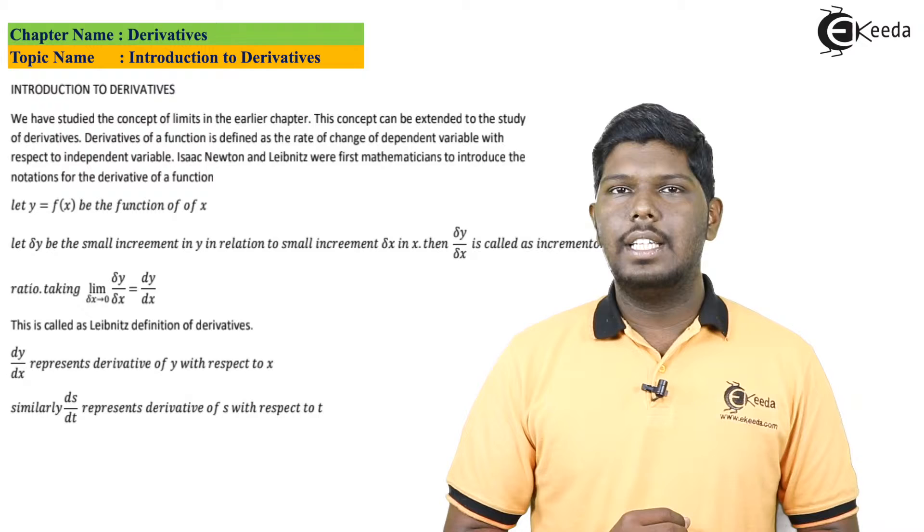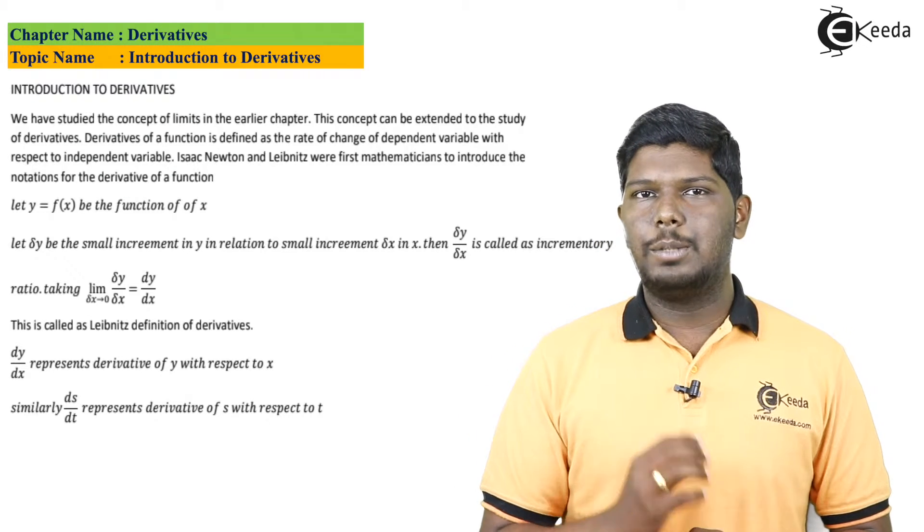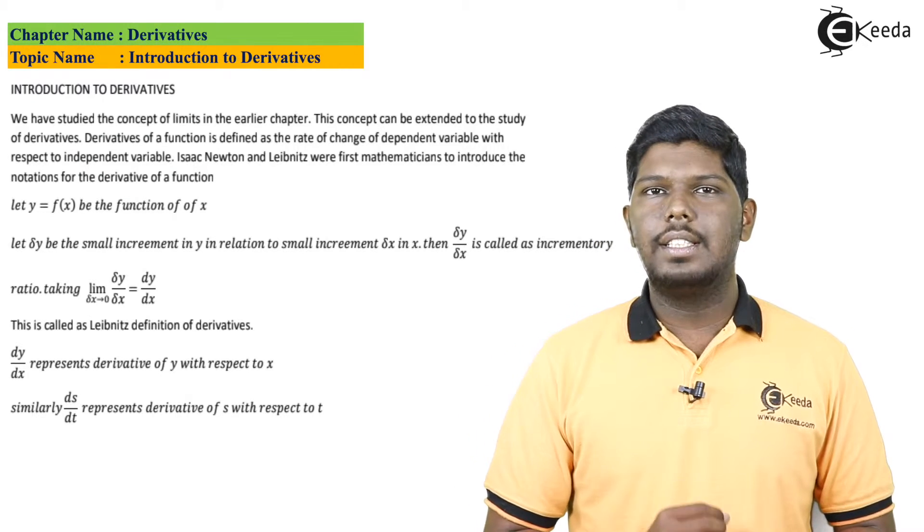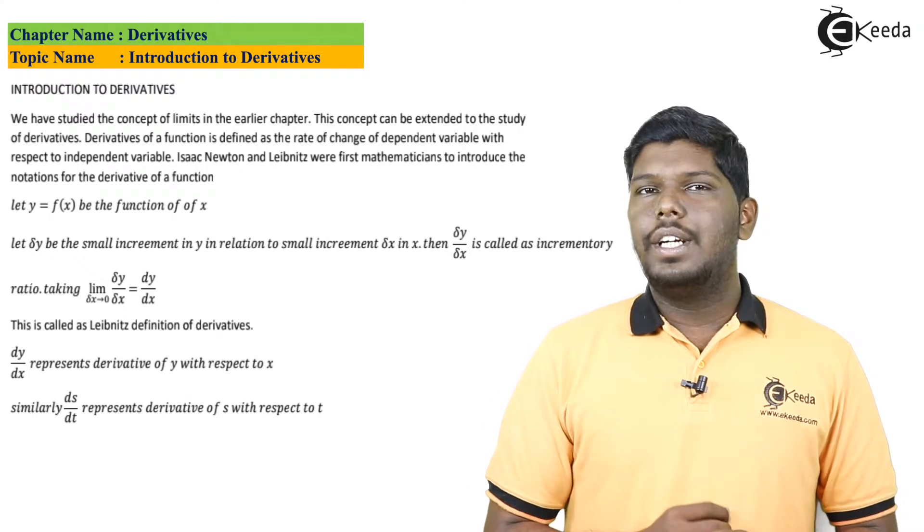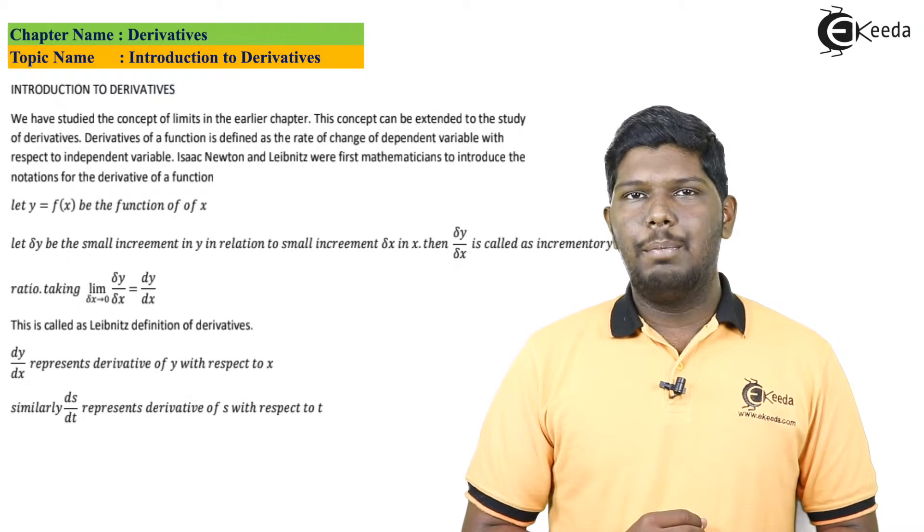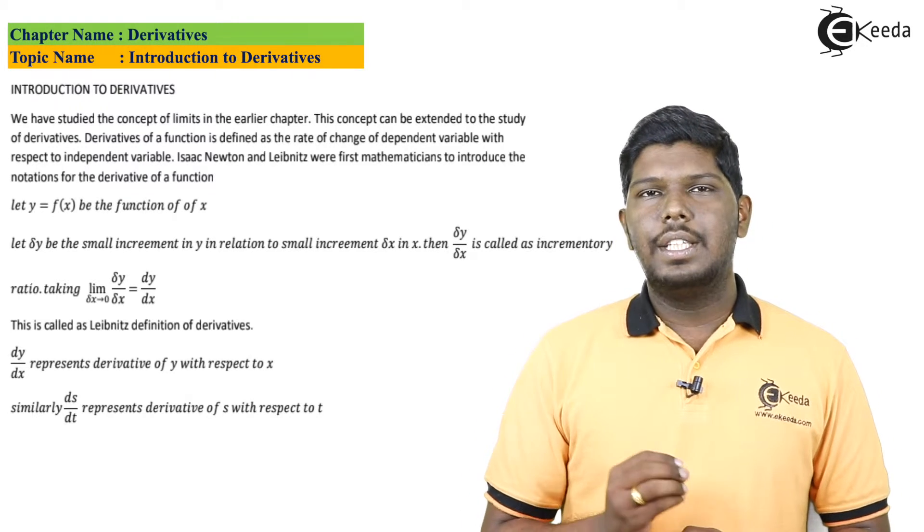And that can be written as dy by dx. This was the definition given by Leibniz. So basically, a derivative is described as change in one quantity with respect to another quantity.